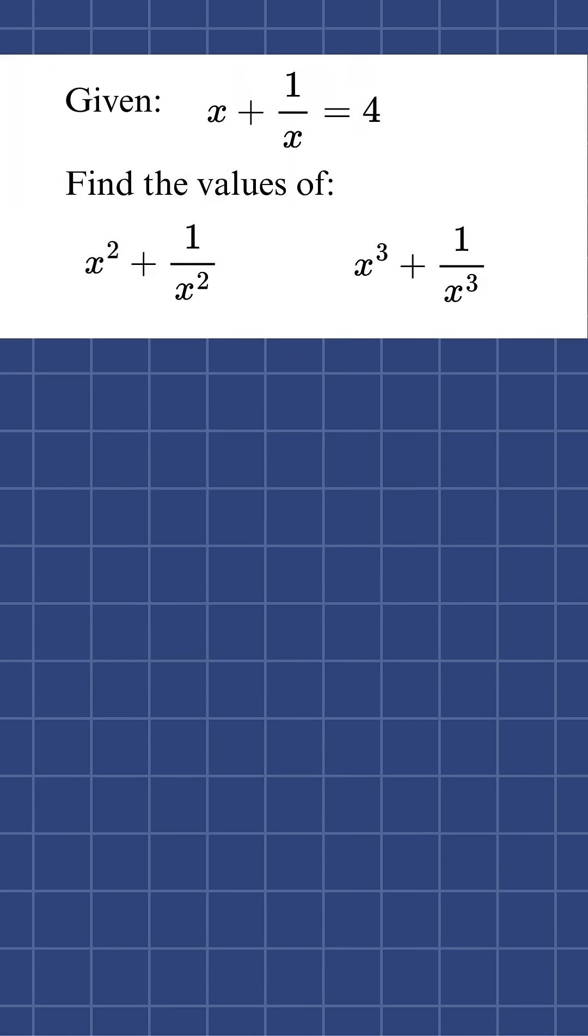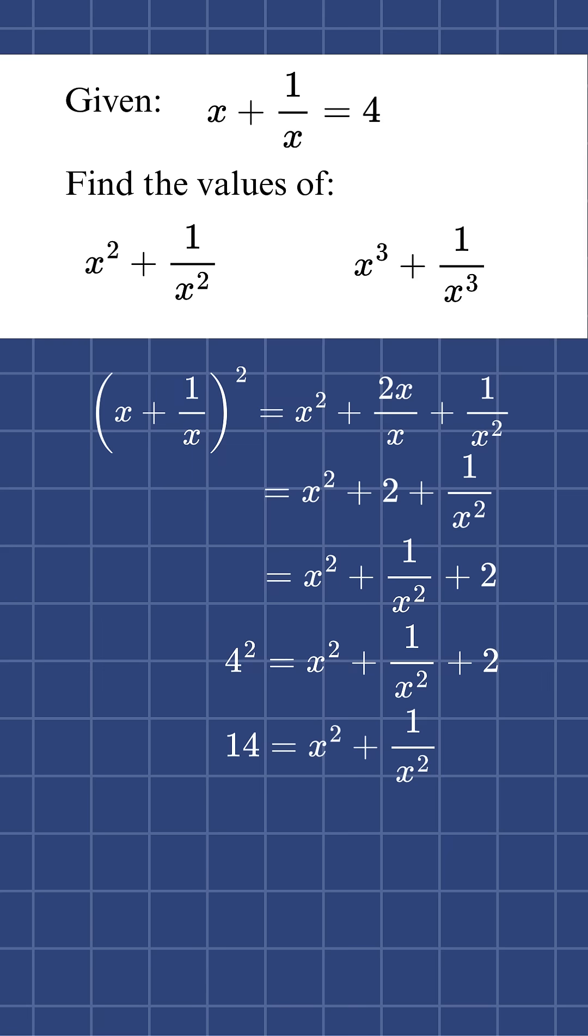So the way I ended up solving this was starting with the squared identity of x plus 1 over x. So if I take the square of that, then I get x squared plus 1 over x squared plus 2. And if I substitute in what I know about x plus 1 over x, then I can find that x squared plus 1 over x squared equals 14.